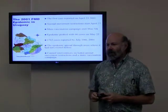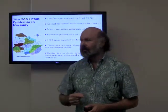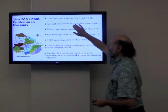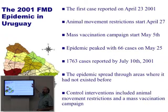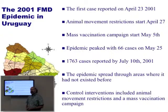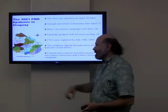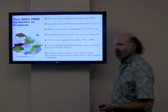We looked at what the number of infected cows was most sensitive to. Very quickly, within four days, they stopped all animal movement across the whole country. Maximum vaccination started on May 5th. The epidemic peaked on May 25th, with 1,700 cases by July 10th, and it was reported as under control. Unlike in Britain, it was a very fast, very quick response.